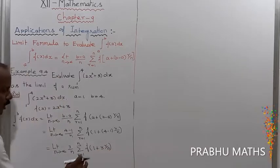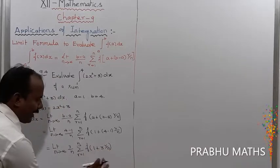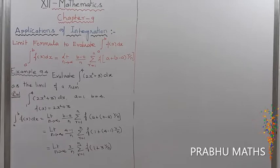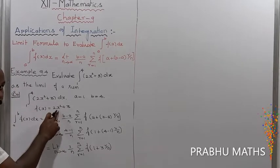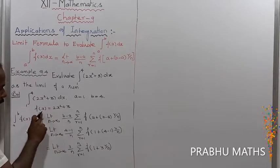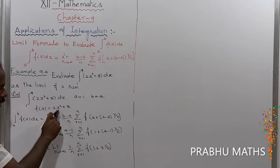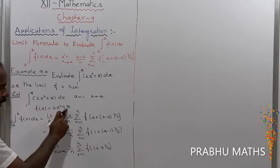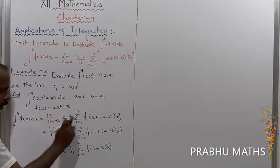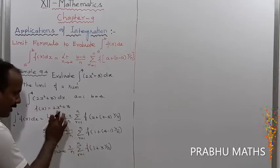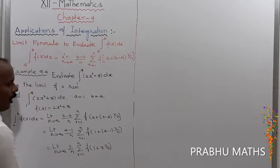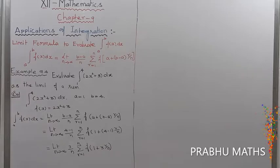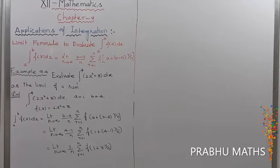Now f(x) is replaced: f(x) equals 2x² + 3, and x is replaced by 1 plus 3r/n. So we substitute x = 1 + 3r/n into f(x).